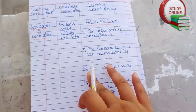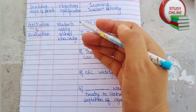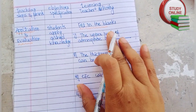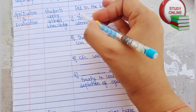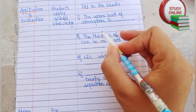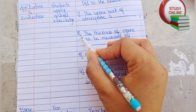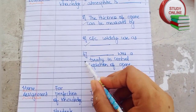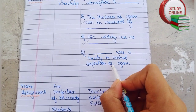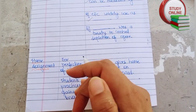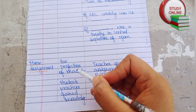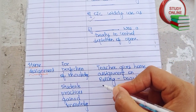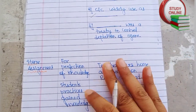This is the last page of our lesson plan — application and evaluation. I have added four questions here: the upper part of the atmosphere, how the thickness of ozone can be measured, CFC is widely used as blank, and blank is a treaty to control depletion of ozone. For the home assignment, the student teacher will give the home assignment on the rolling board to reinforce knowledge.